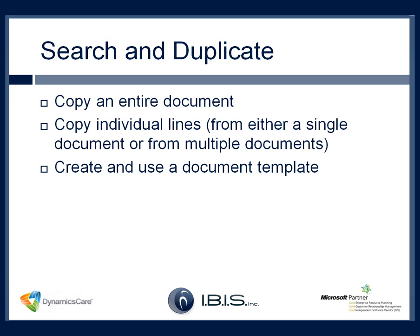Search and duplicate is great for creating and using a document template. For example, if you are traveling on a project three weeks out of the month for several months, you can go into your expense transactions, fill out all your header information, and add expense lines for airfare, hotel, rental car, mileage, gas, meals, and per diem. Just save the transaction without submitting it. Then each month, use search and duplicate to find that document, copy the entire thing, and just edit the amounts, dates, and descriptions as needed.